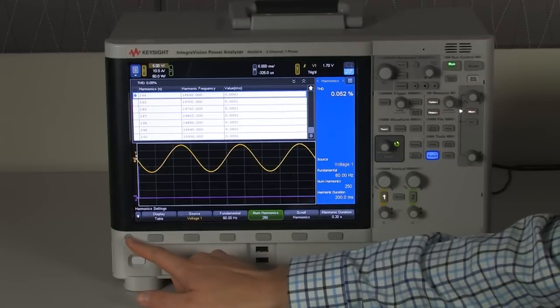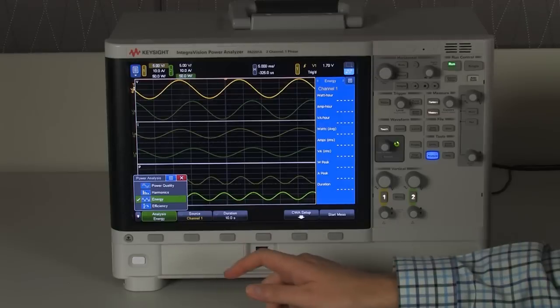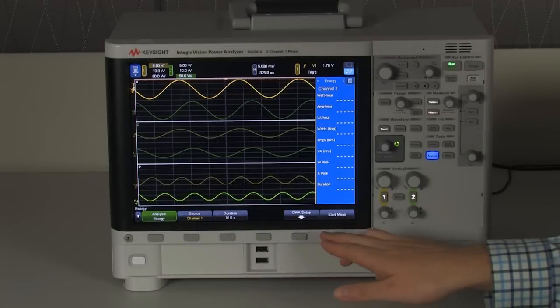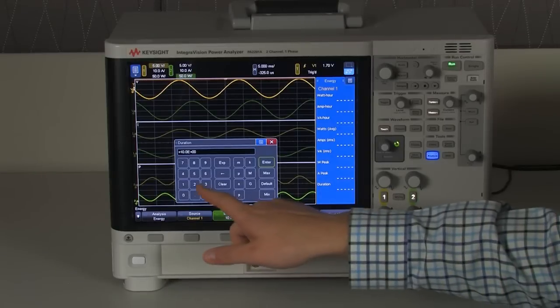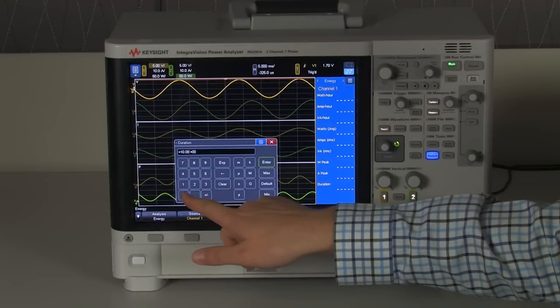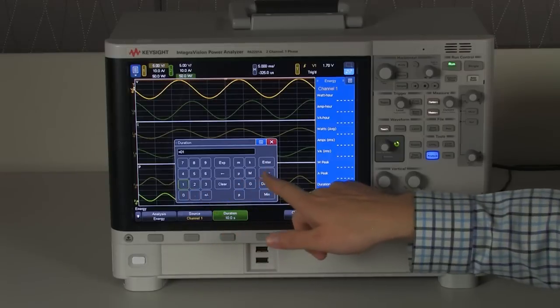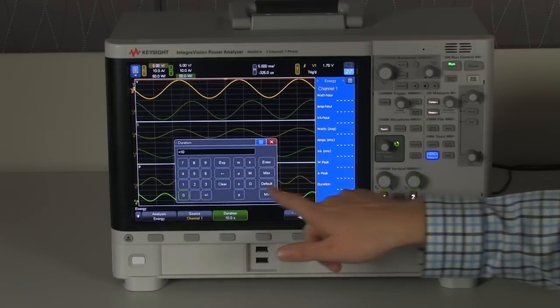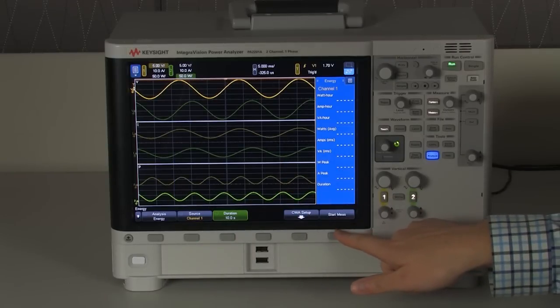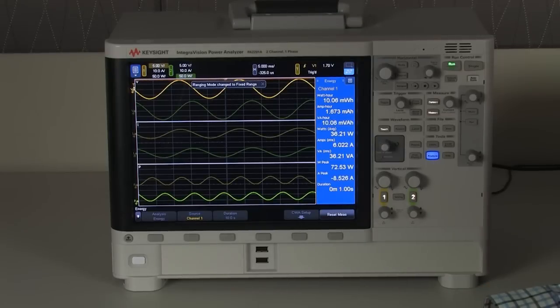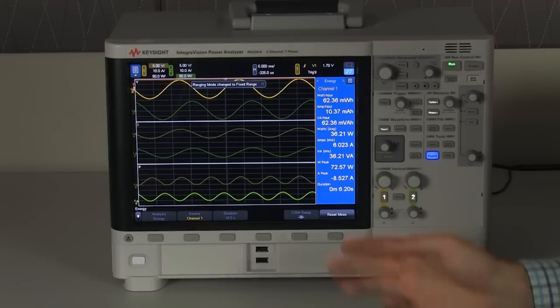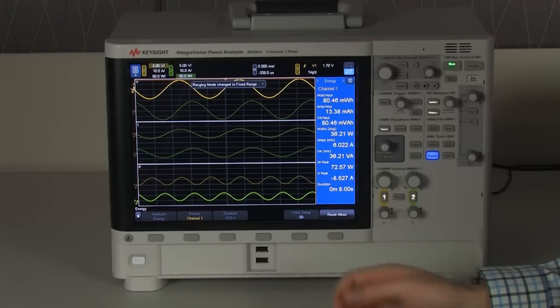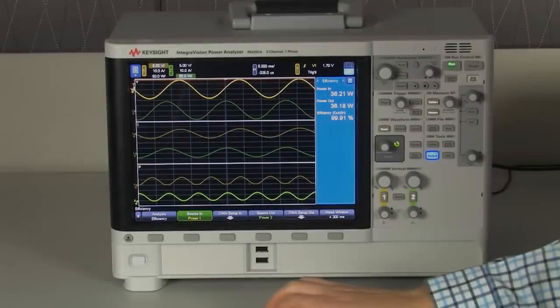After our harmonics menu, the next thing we can do is energy measurements. In this case, we can set up how long we want to do our energy measurement for. Let's say I want to do it for 10 seconds. And I can start the measurement. And after 10 seconds, I will see how much power I consumed in that time. This can be configured up to as much time as you're going to possibly need for energy measurement.